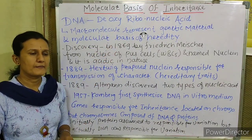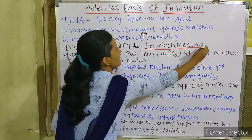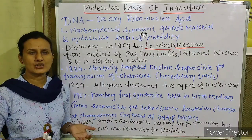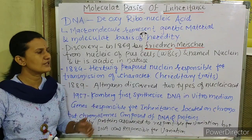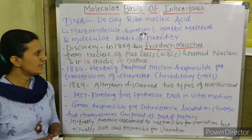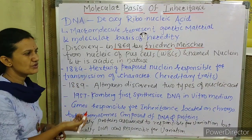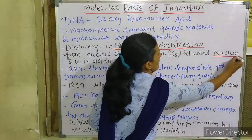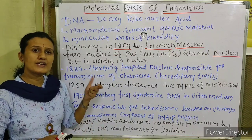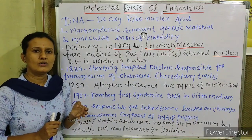Let's start with the discovery of DNA. In 1869, Frederick Miescher discovered the Nuclein. He wanted to find a substance, and he found the Nuclein. He collected the bandages of patients who had injuries from a local hospital.